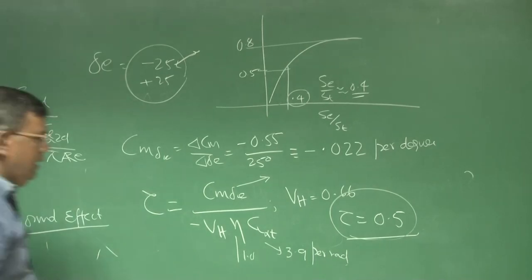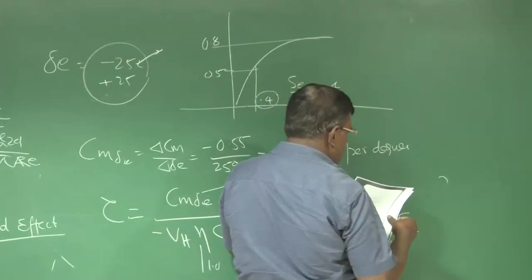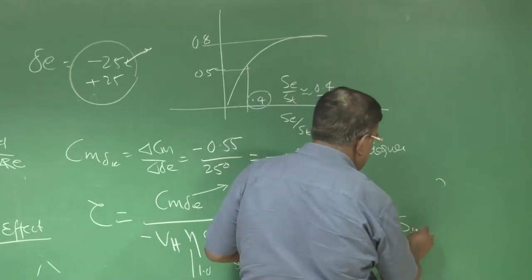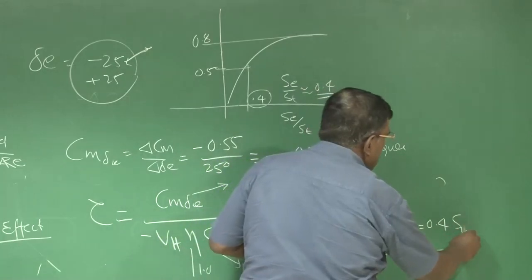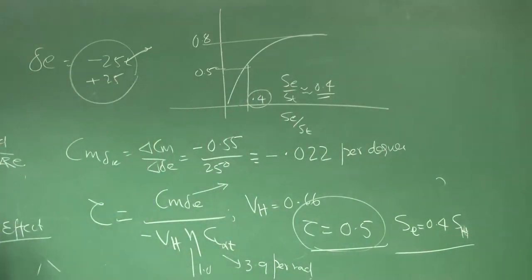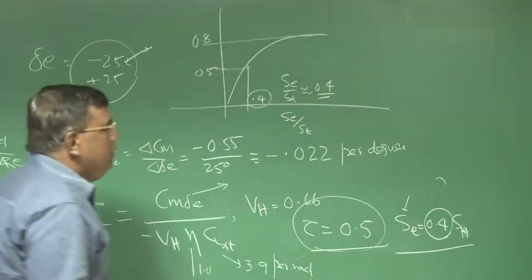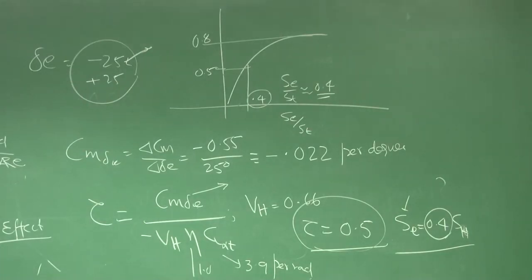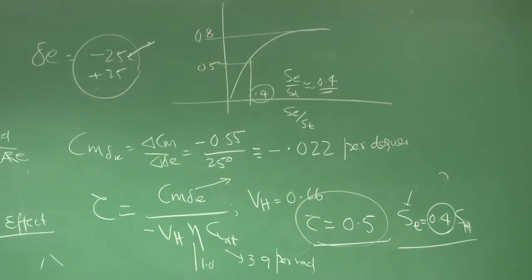Once I get tau as 0.5, I come here again. I try to check how much this means. For tau 0.5, if you see that graph it will come to again around 0.4. That is, AC by ST will be approximately 0.4. So that again comes back to 40 percent. You can easily write here: I need elevator area as 0.4 times horizontal tail area. You have rough idea of horizontal tail area, so you can find elevator area, which tells you for rectangular tail, just take 40 percent chord elevator. That will suffice your initial estimates.